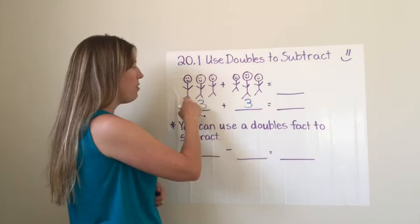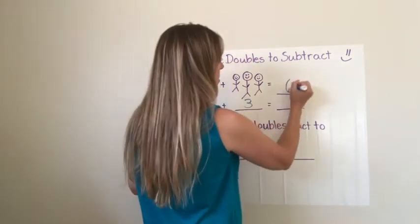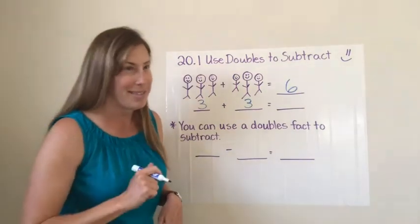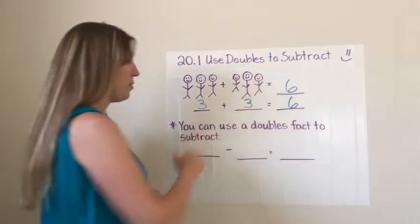So all in all if I count them I have one, two, three, four, five, six kids. Now hopefully you know that already. You should know that one. That was an easy one. And I'm going to put my sum here because three plus three is six.